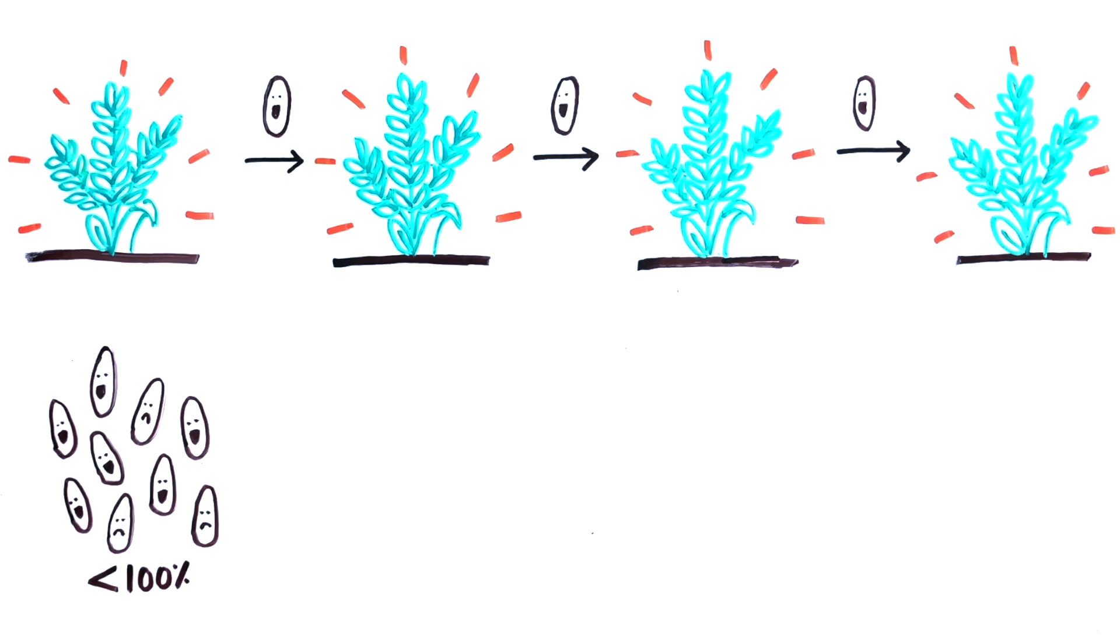Excitingly, since all of the key genes involved in this approach are found in other plants, the same strategy could potentially be used in other important crops like corn, tomatoes, and wheat.